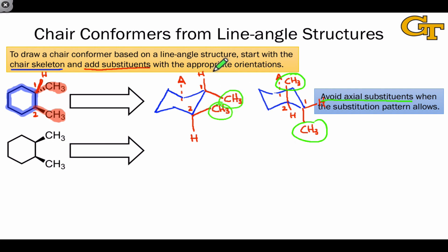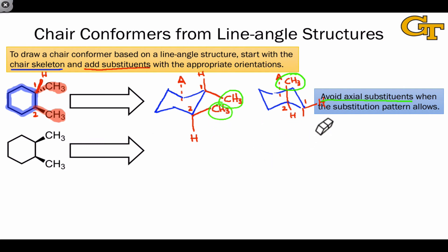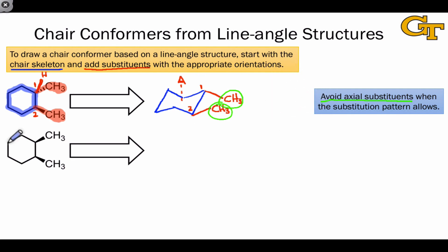The left-hand structure avoids axial substituents entirely, with both methyls equatorial, which makes it clear that the left-hand structure is the most stable conformer of this disubstituted cyclohexane.